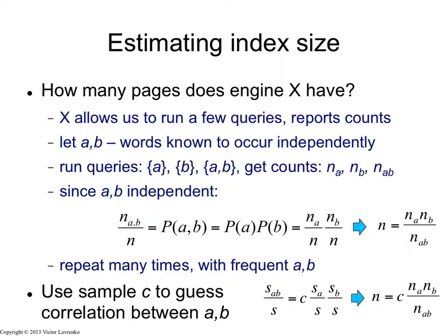From that, I can estimate C, the amount of correlation, and then I can stick that C into the formula for re-estimating the total index size. So now I'm going to run my queries, take N of a, N of b, divided by N of a and b together, multiplied by C, the amount of correlation, and that will tell me the total size of the index of X.